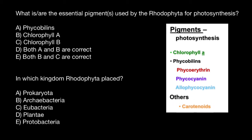Now let's check our answers. Variant A is ficobilines and chlorophyll a, which means that our choice has to be variant T — both variant A and B are correct. Here's the second question: in which kingdom is Rhodophyta placed?